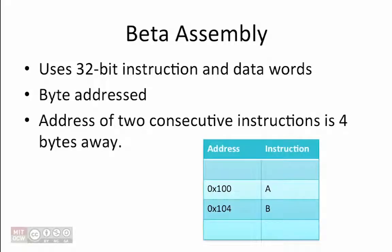That means that if you have two instructions, A and B, in consecutive memory locations, if A is at address 0x100, then B is at address 0x104.